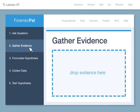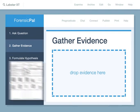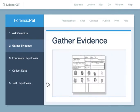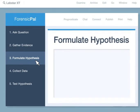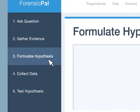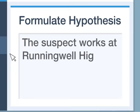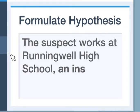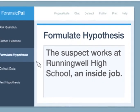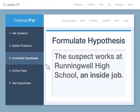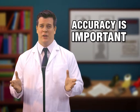Then we gather evidence. Gathering evidence is what you did at the crime scene. Then we formulate a hypothesis. A hypothesis is an educated guess about an answer to the question. My hypothesis about the Running Well case is that it's an inside job. Once we have our hypothesis, we collect data. Collecting data is where our math skills start to come into play.